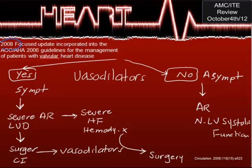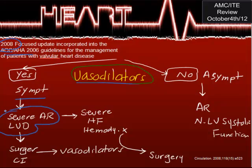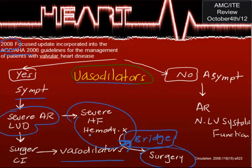Now for treatment, according to 2008 guidelines, vasodilators are the main medical therapy — but they are not a cure; they are a bridge before surgery or help slow disease progression. If the patient has symptomatic severe aortic regurg or left ventricular dysfunction, surgery is usually needed. Vasodilators can stabilize the patient hemodynamically before surgery. If surgery is contraindicated, continue vasodilators as the only option.